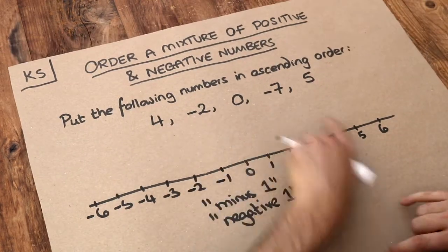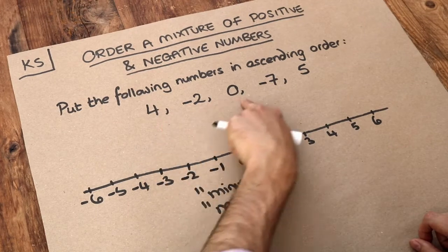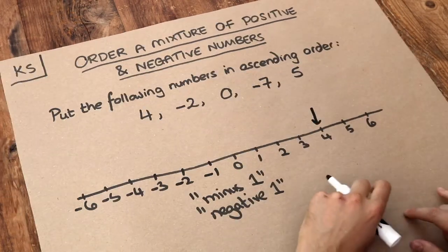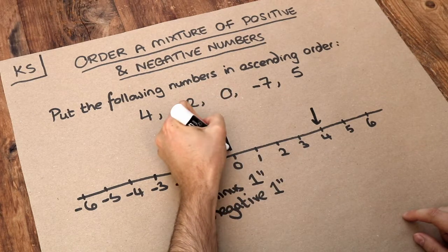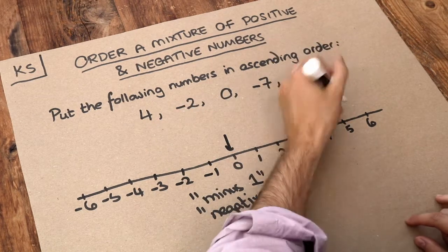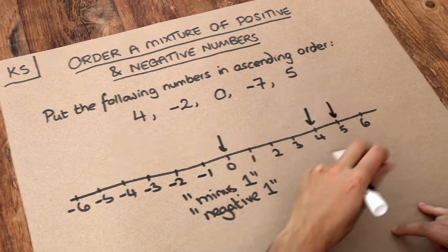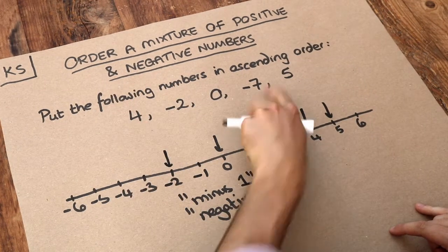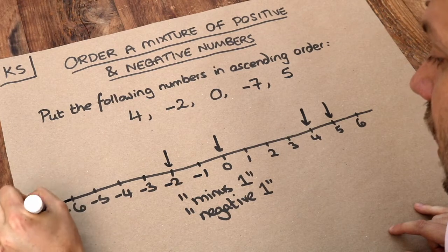So now we need to order these numbers. So let's indicate each of these numbers on the number line. Four is just here. Zero is here. We've got five up here. We've got negative two, or minus two, here. And we've got minus seven down here.